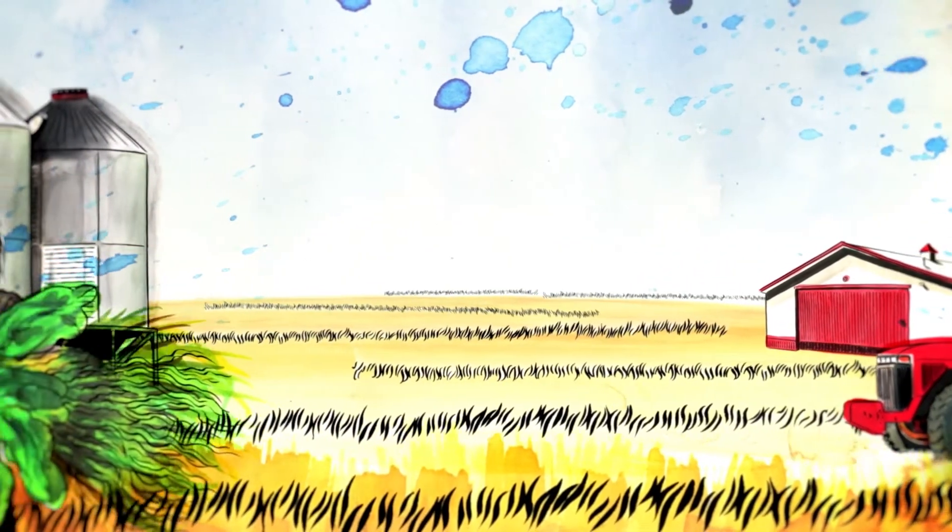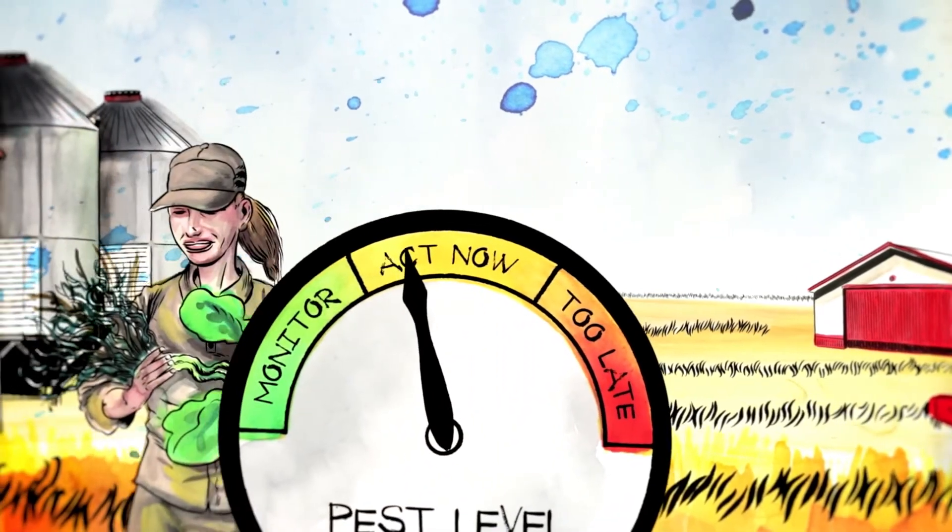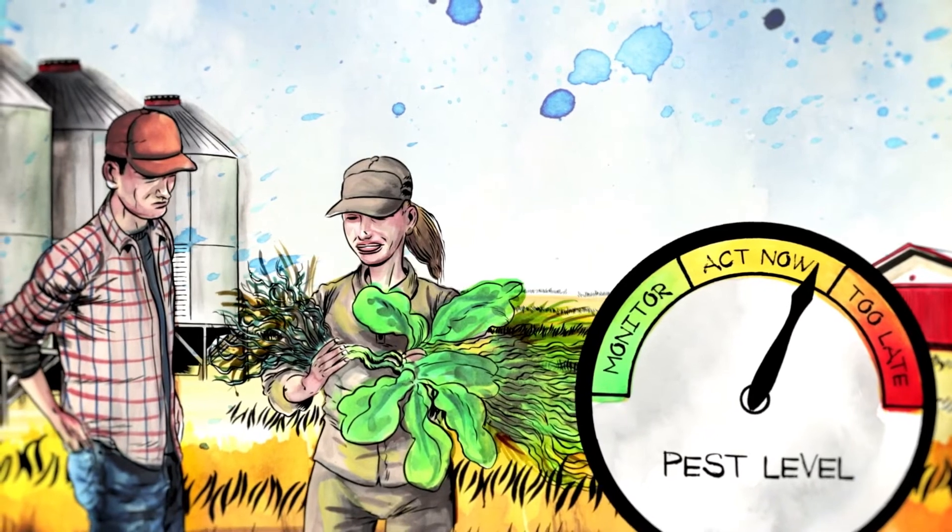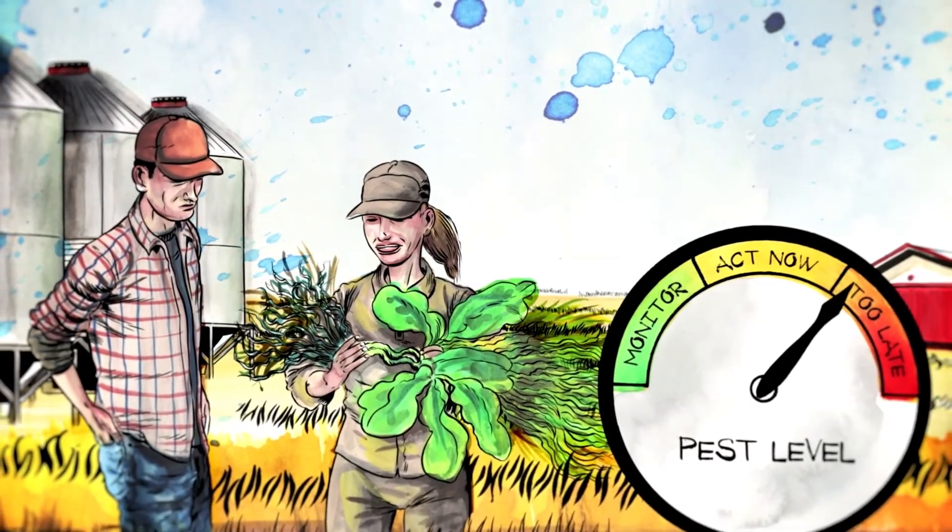Precision is the key. Farmers, with the help of agronomists, closely monitor their fields to assess the risk of pest infestations and determine if or when a pesticide should be used.